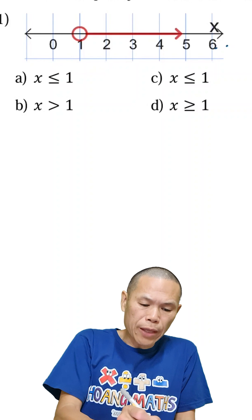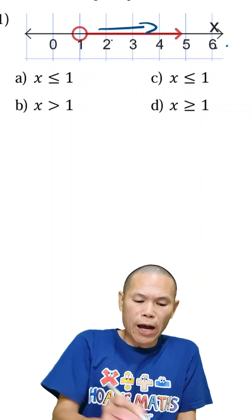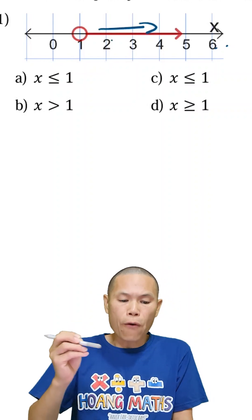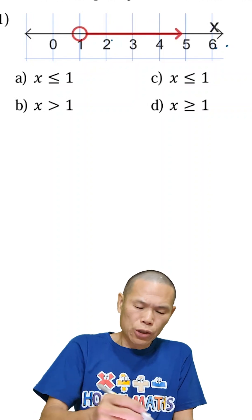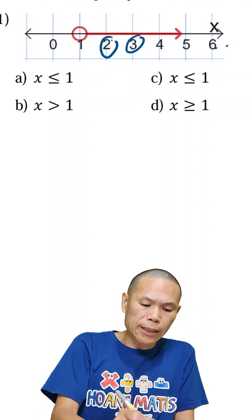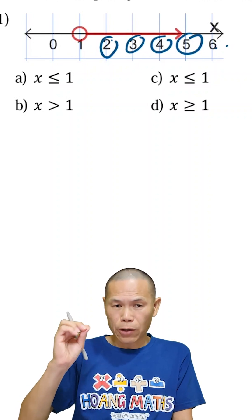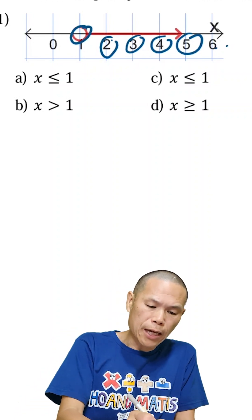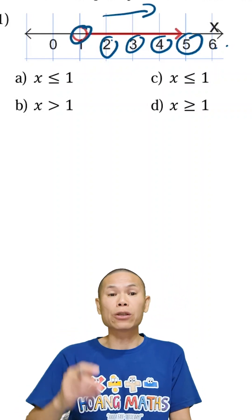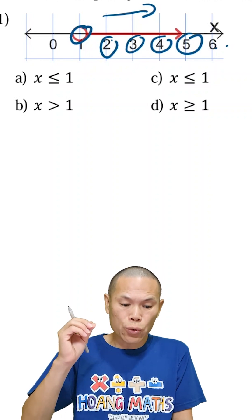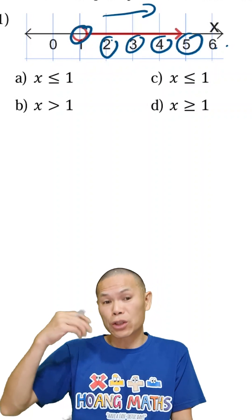So question number one, if you look at this, we start from number one and it's going this way, pointing to two, three, four, five, six and so on. So we know that these numbers here, they're all greater than one, correct? Because it starts from here and goes to this side. These numbers here, two, three, four, five, six, seven and so on, they're all greater than one.